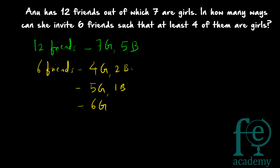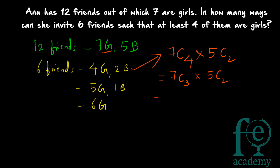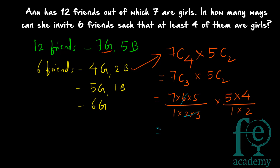Case 1: 4 girls and 2 boys. Select 4 girls from 7: 7C4 = 7C3. Select 2 boys from 5: 5C2. So the number of ways = 7C3 × 5C2 = (7 × 6 × 5)/(1 × 2 × 3) × (5 × 4)/(1 × 2) = 35 × 10 = 350.